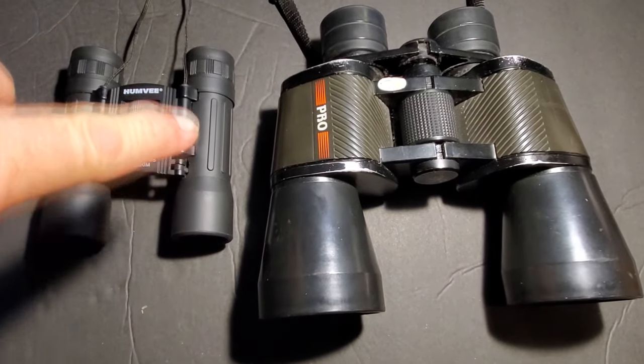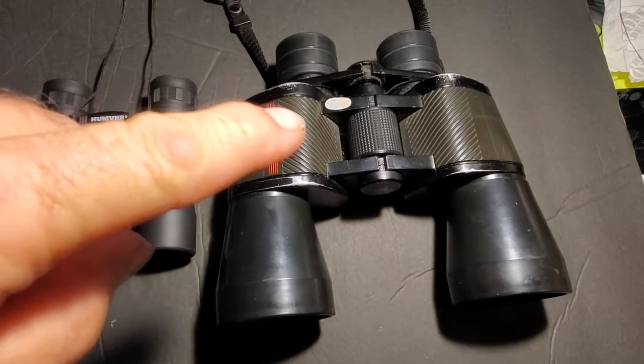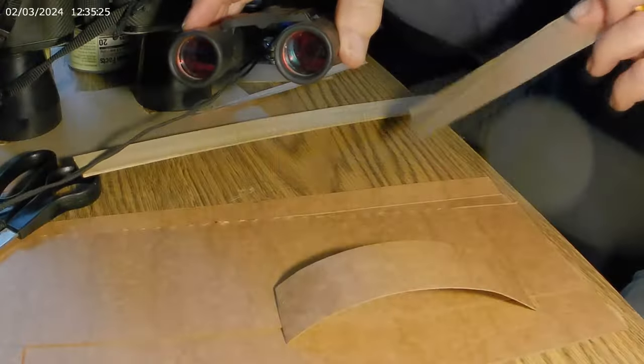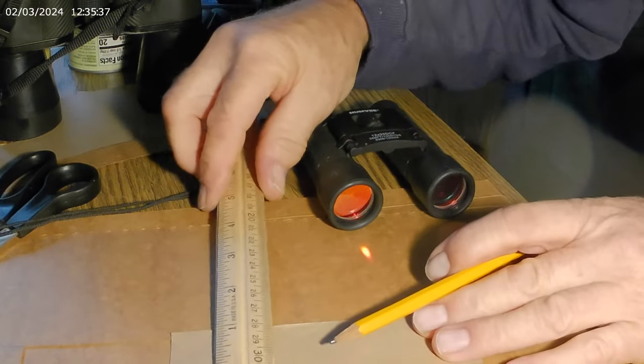There's two types of binoculars. There's one that has the light that just goes straight through the tube, and the other one has a prism in it where the light is reflected back and forth, and they require a little bit different design.